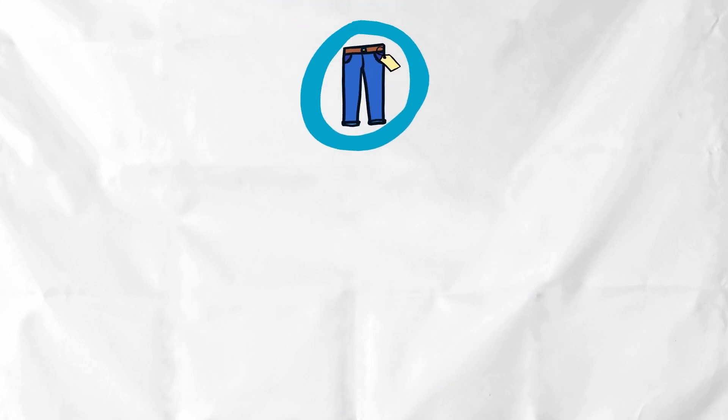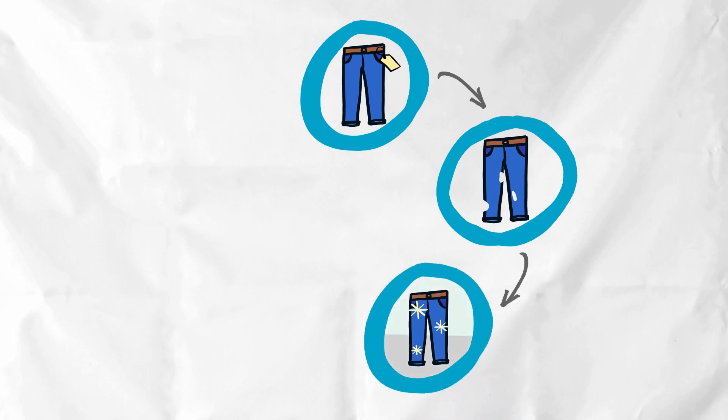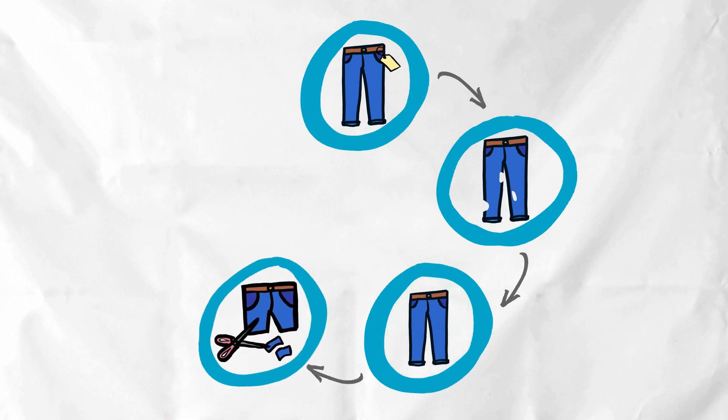In a circular model if the jeans ended up having a hole in them we'd repair them. Over time as they become more worn we would maybe downgrade them from the smart pair we'd wear out to the ones we wear around the house, and then we would even repurpose the jeans into shorts and use the offcuts to repair other pairs of jeans.